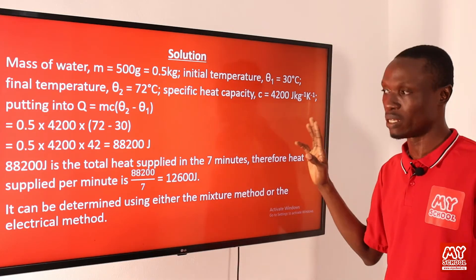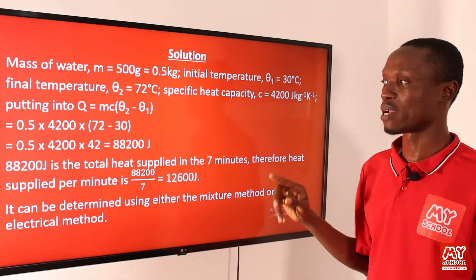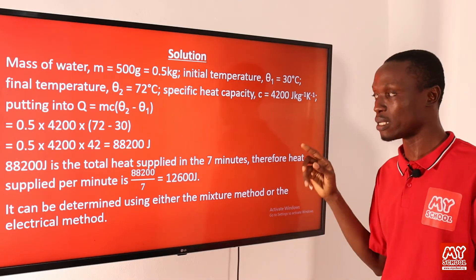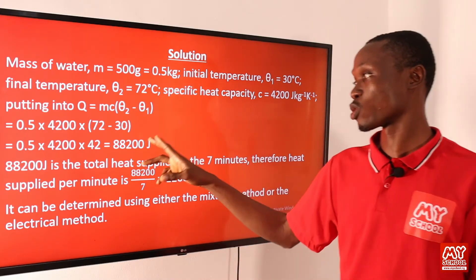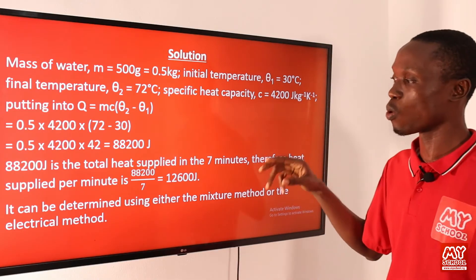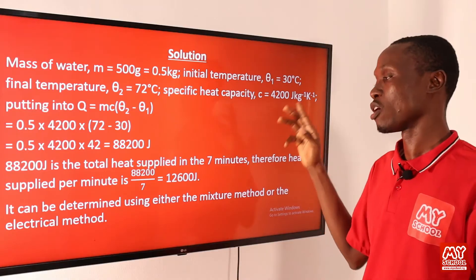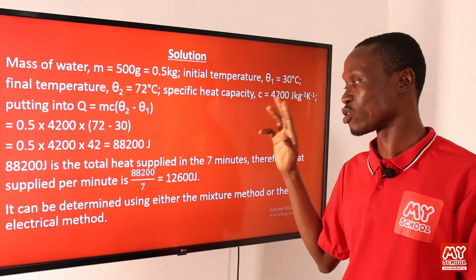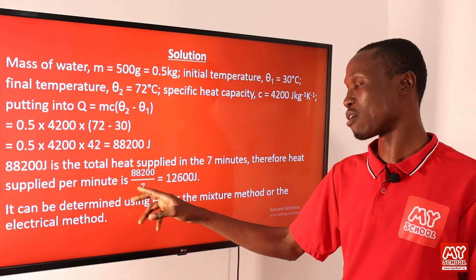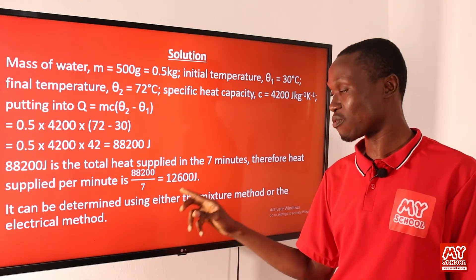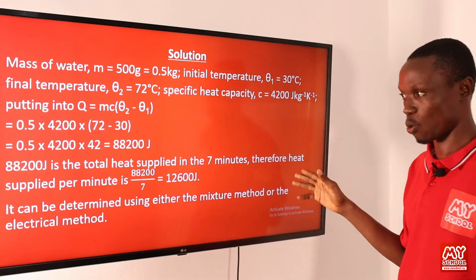The 88,200 joules is the total heat supplied in seven minutes. However, the question asks for the heat supplied per minute. So we divide by seven: 88,200 ÷ 7 = 12,600 joules per minute.